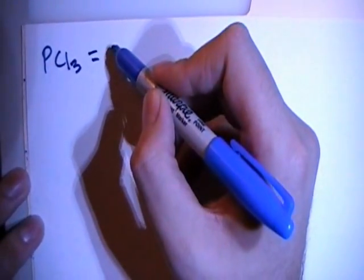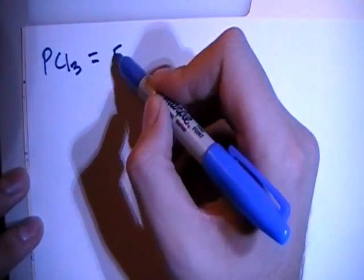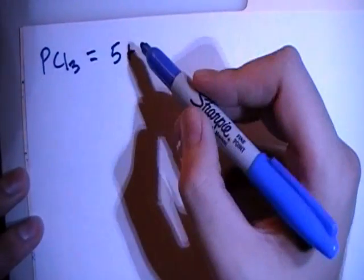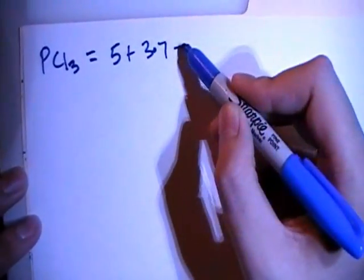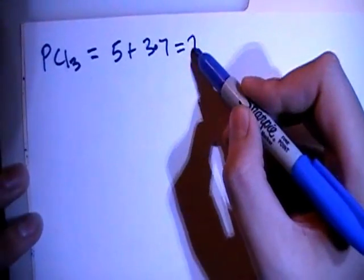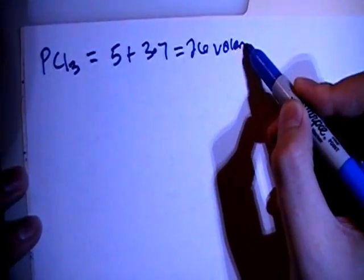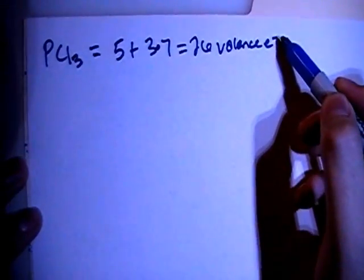We've got PCl3, and that's going to give us 5 valence electrons from the phosphorus, plus 3 chlorines, each with 7 valence electrons, for a total of 26 valence electrons.